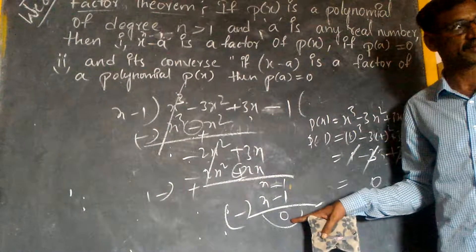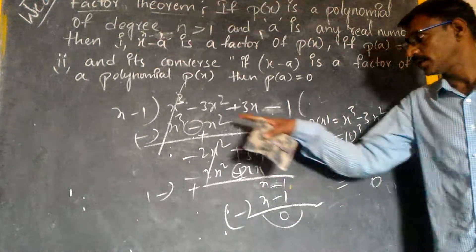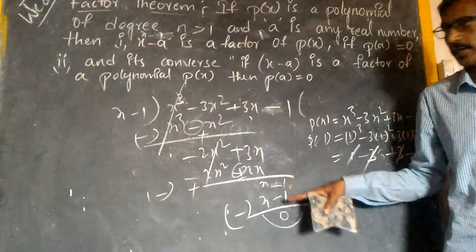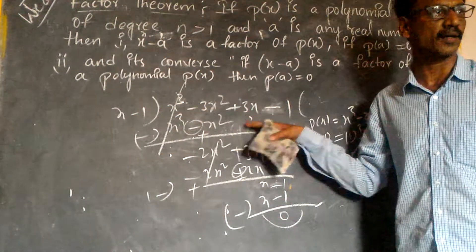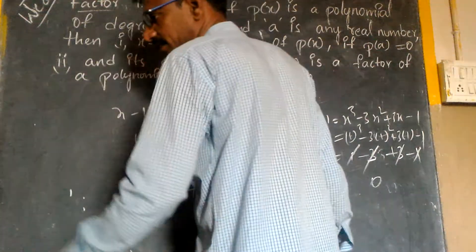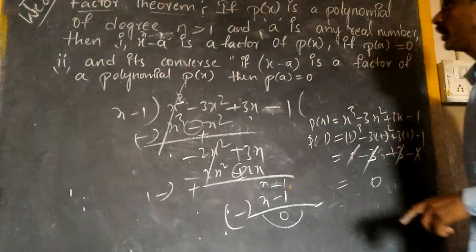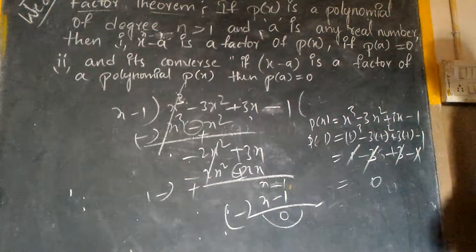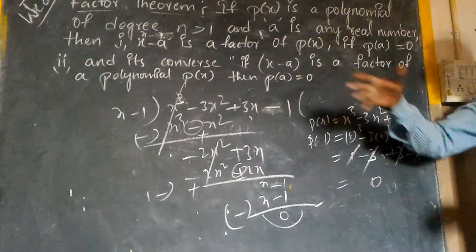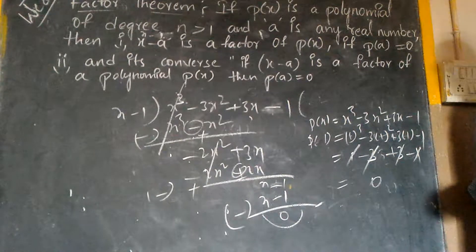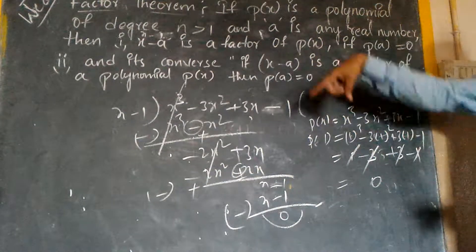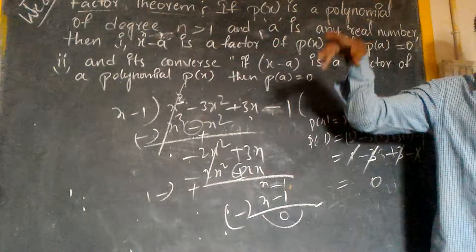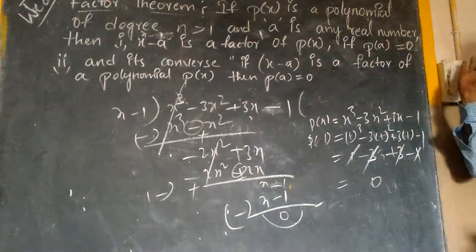So by long division method we can verify it — it divides completely. Therefore x minus 1 is a factor of this polynomial. Here also the same statement holds: if p of x is a polynomial of degree n greater than 1, and a be any real number, then x minus a is a factor of p of x if and only if p of a equals 0.